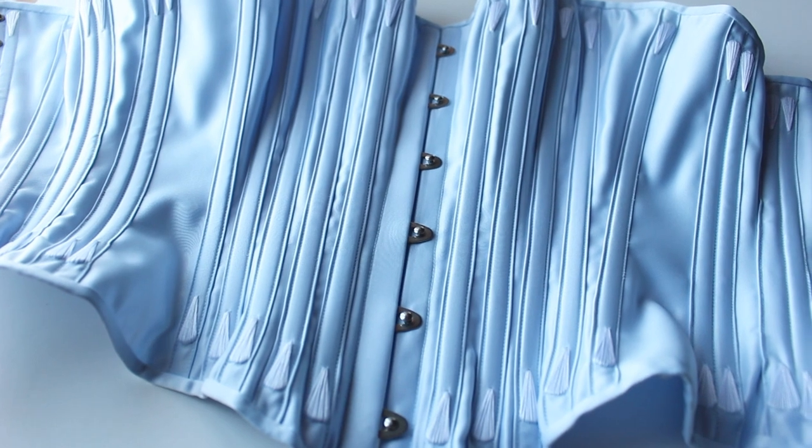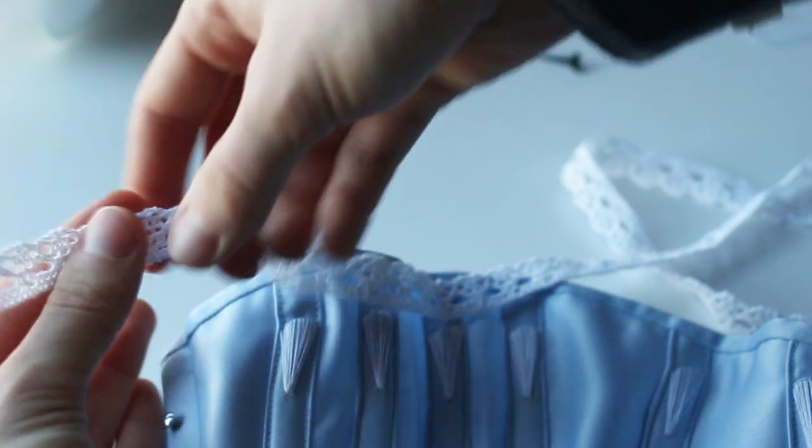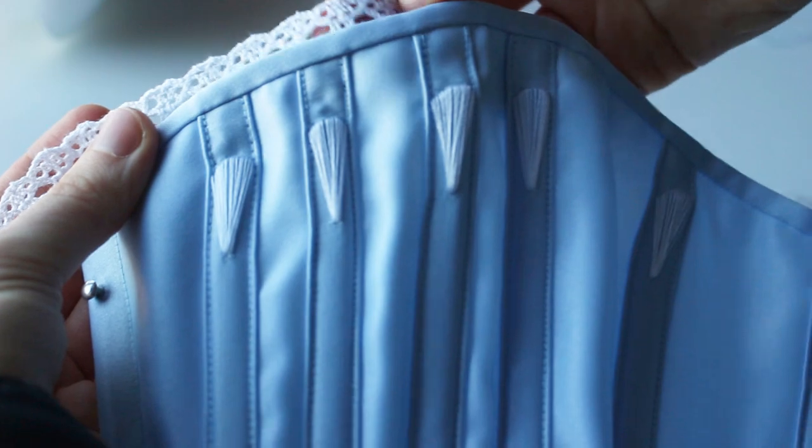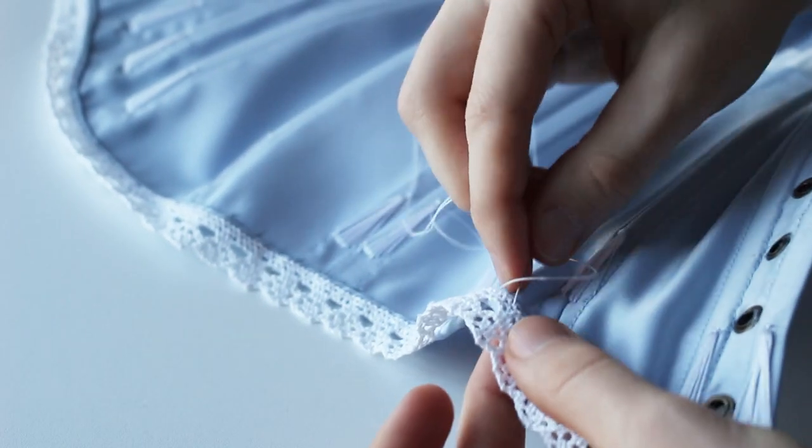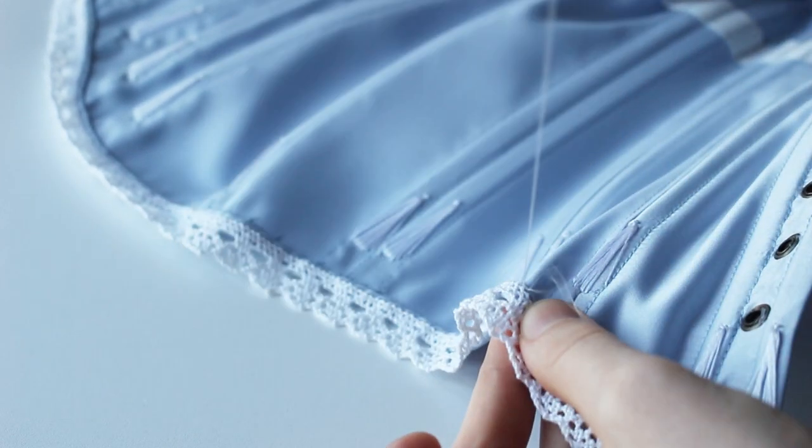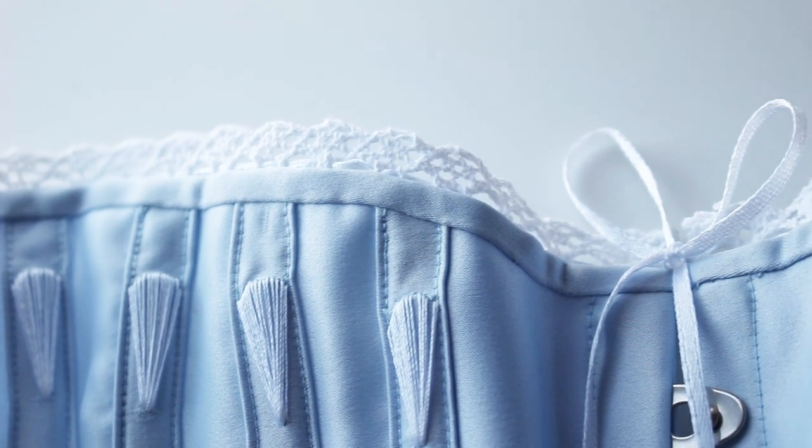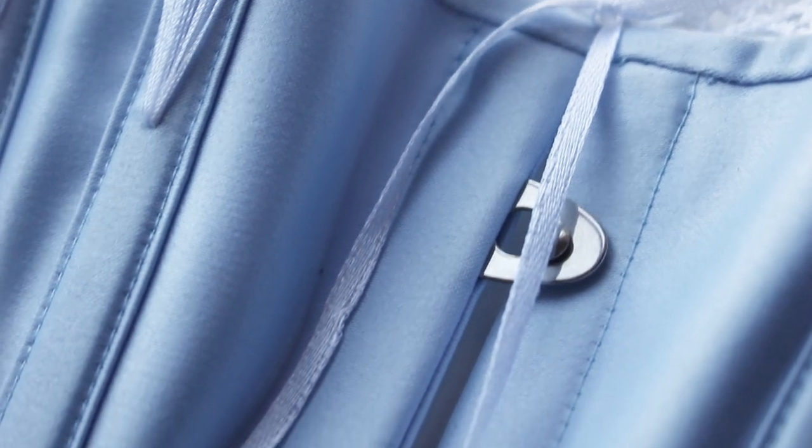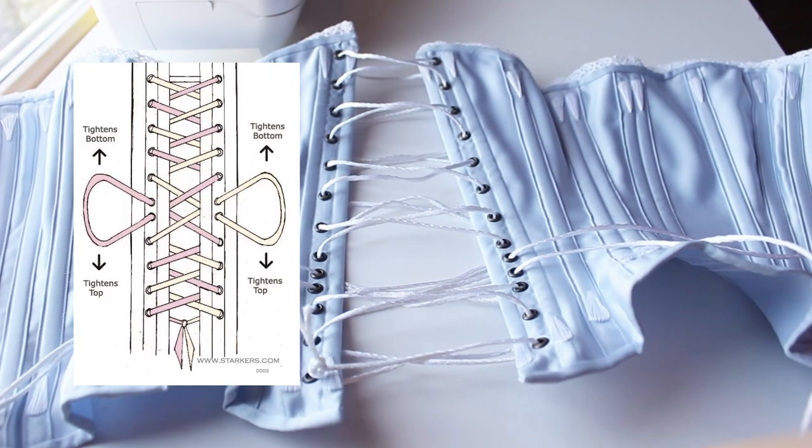I wanted to add something else to decorate the corset, so I stitched this lace trim to the top from the wrong side. And one final touch, I threaded a ribbon through lace and made a bow at the center front. Then all I had to do was lace the corset, I used inverted bunny ears technique.